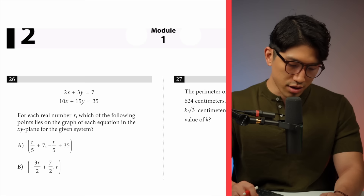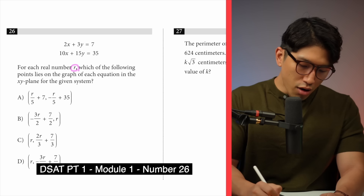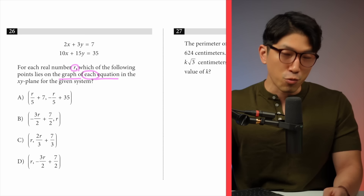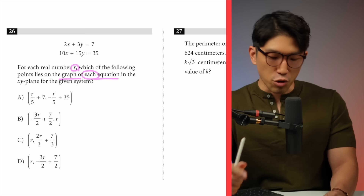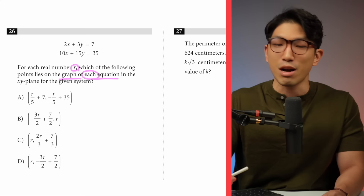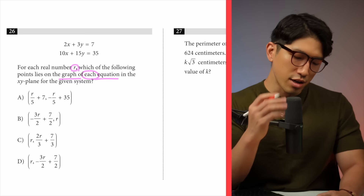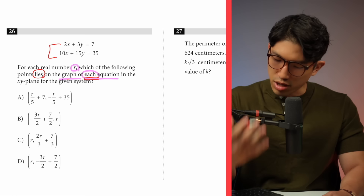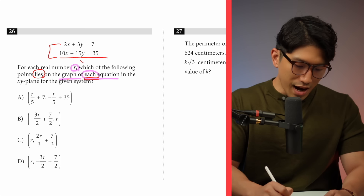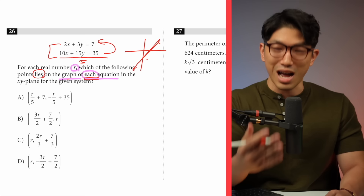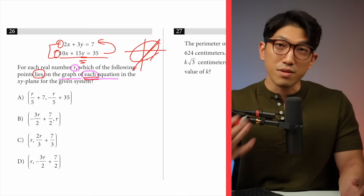The third question says: for each real number r, which of the following points lies on the graph of each equation in the given system in the x-y plane? It seems straightforward — just plug in the data points — but it would take forever to plug in all of them. The SAT makes questions hard by adding a lot of busy work. The key insight here is to read carefully: looking at the two equations, they are essentially identical — one is just the other multiplied by five. Graphically they're two lines on top of each other, so any point on one is on the other. That cuts the workload in half.